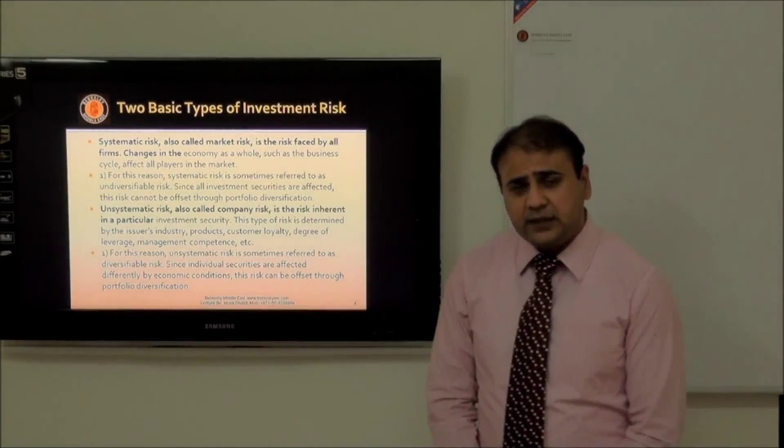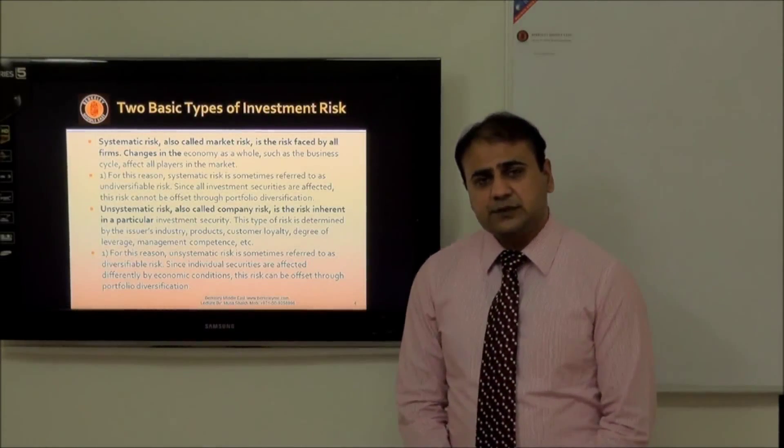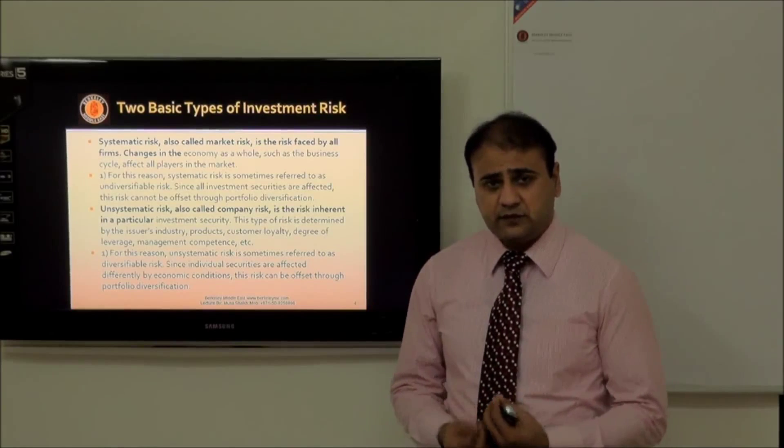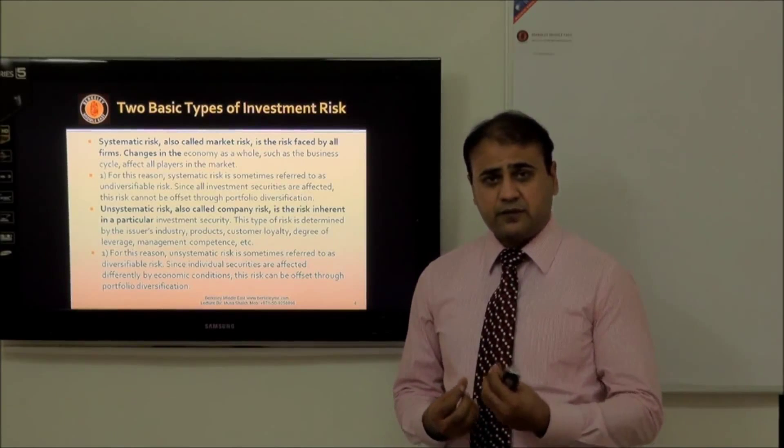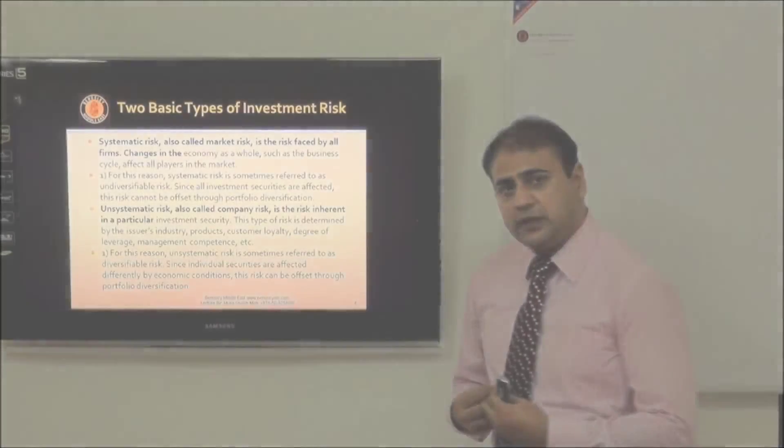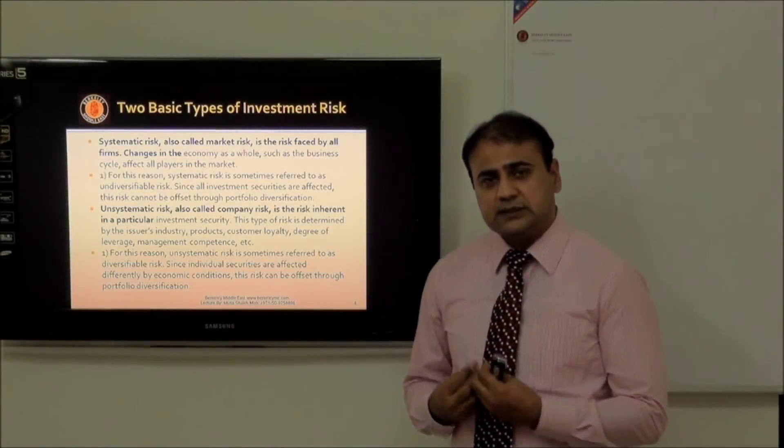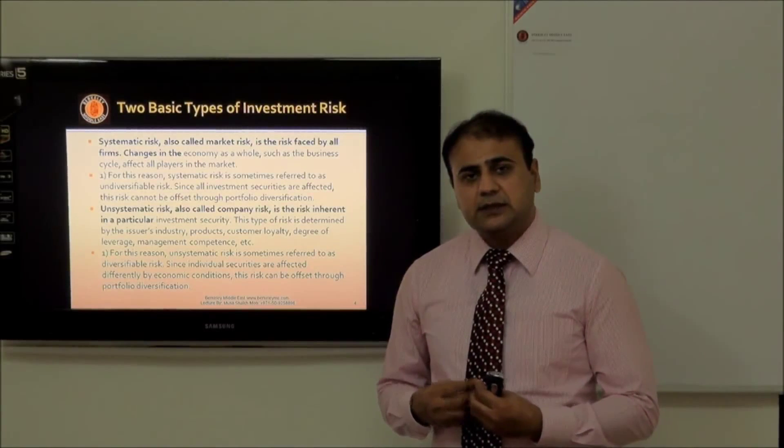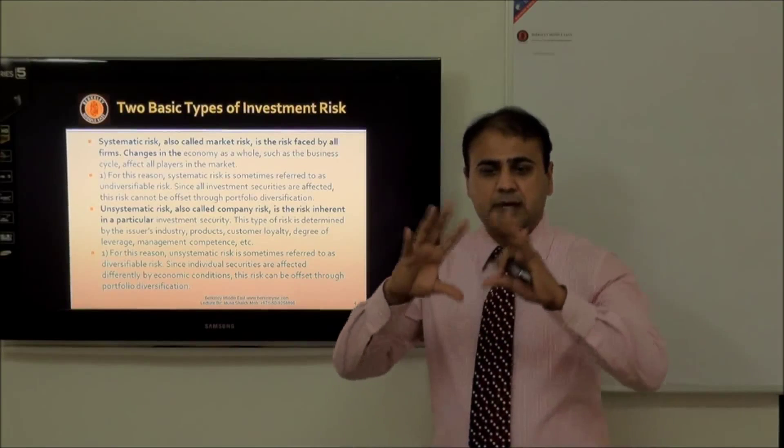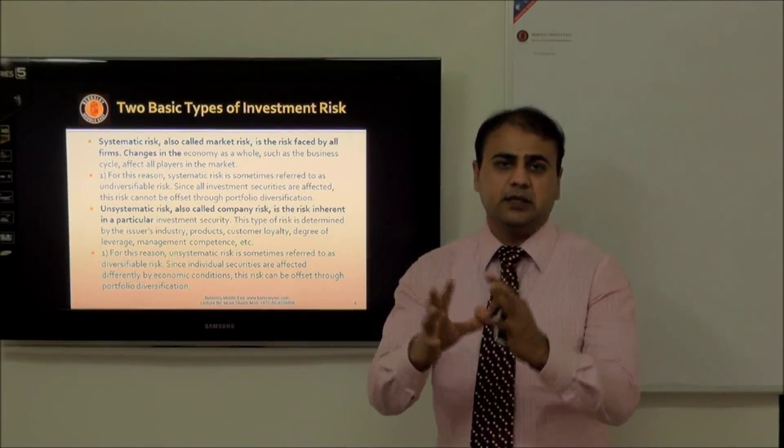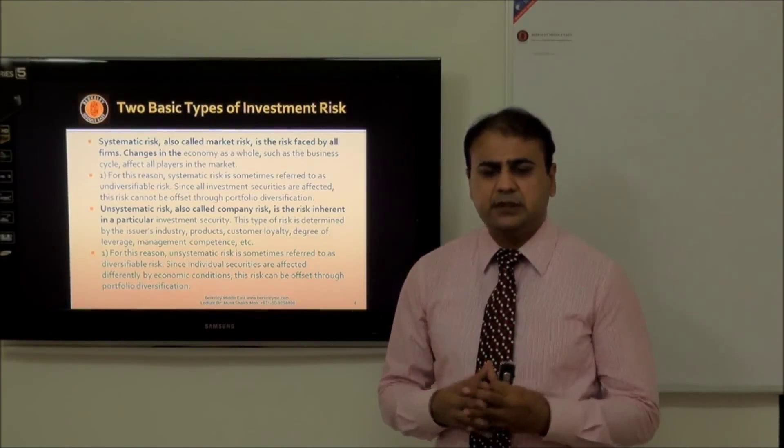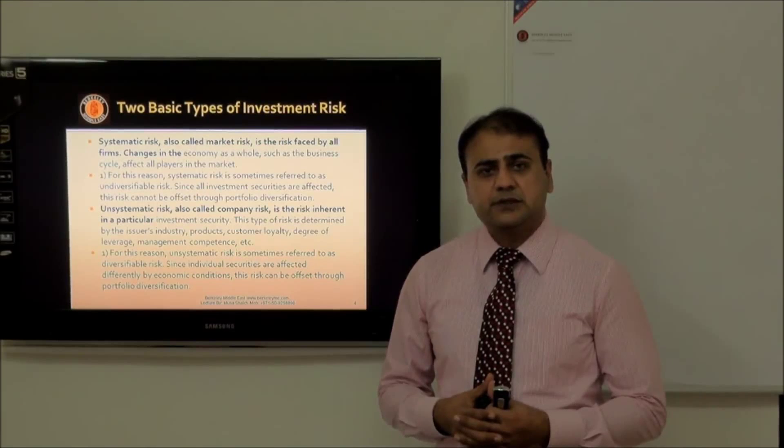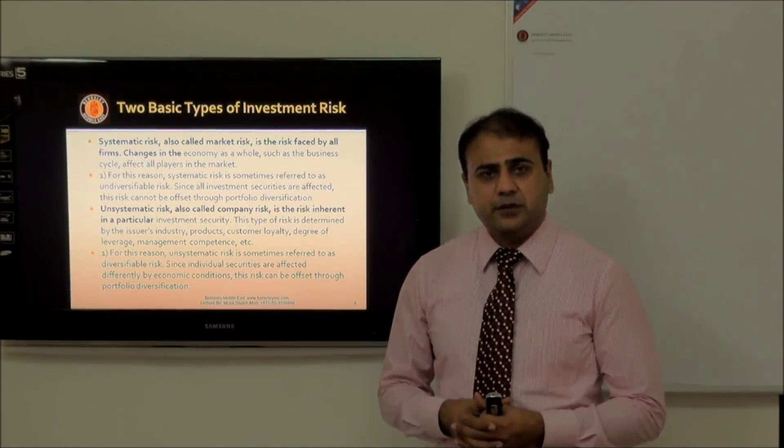There are some types of risk associated with every business, just as there are certain risks associated with humans. When you come on the road you have an accident risk. Same way, a business has risk: one is systematic risk, one is unsystematic risk. Systematic risk is like market risk - because of market conditions, changes in the economic structure, some recession, or some industry shift, you might be losing your business.